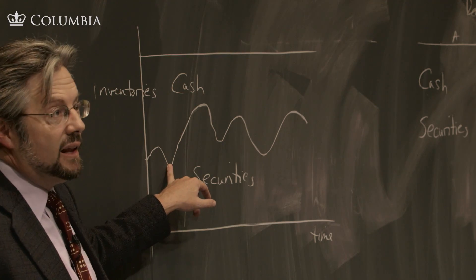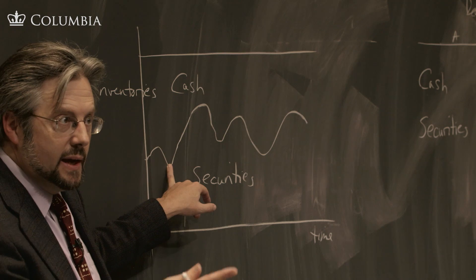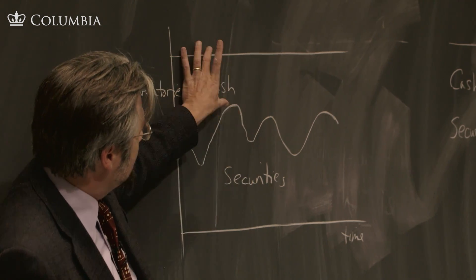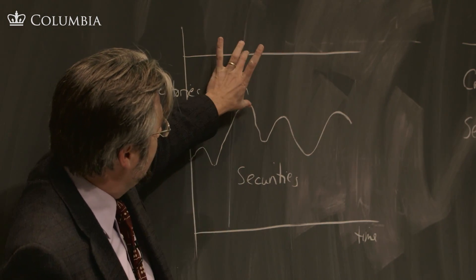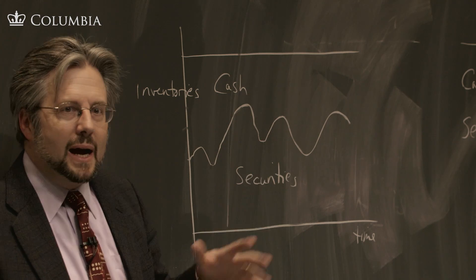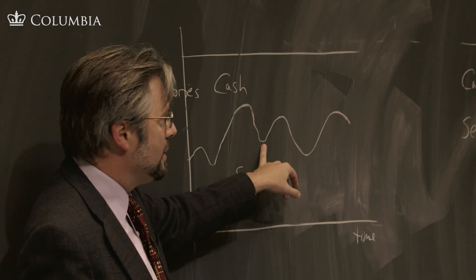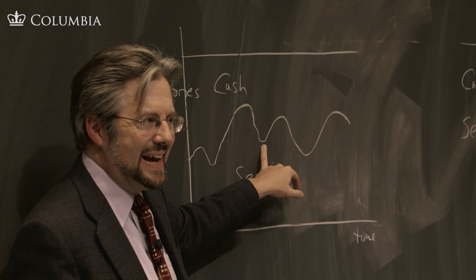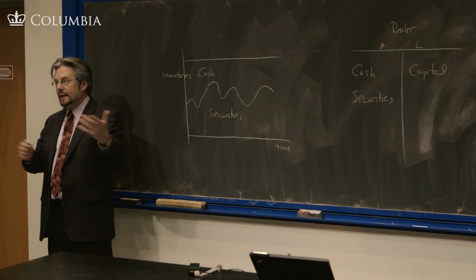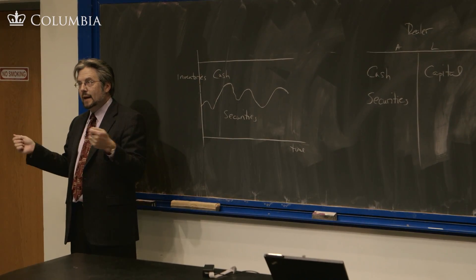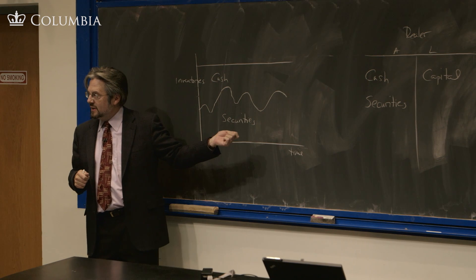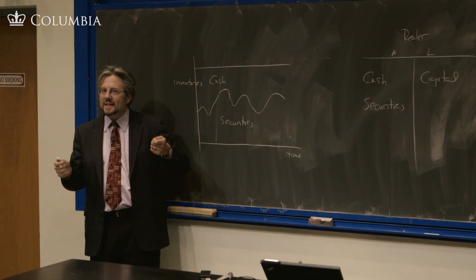As people are selling this dealer securities, that is depleting their cash holding. So they had this much cash, now they have this much cash. So they're buying securities and depleting their cash holding, and then here it goes the other way around. They're selling securities and increasing their cash holding, so they're absorbing the fluctuation in demand on their balance sheet. They're absorbing it in their inventories, moving that inventory around.